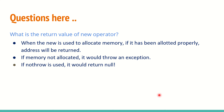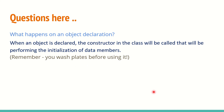What would be the return value of the new operator? When new is used to allocate memory, if memory is available and allocated, it returns the address from where the memory is allocated — which can be collected in a pointer. If memory is not allocated, it will throw an exception. If you do not want the exception, use nothrow — in that case it will return null.